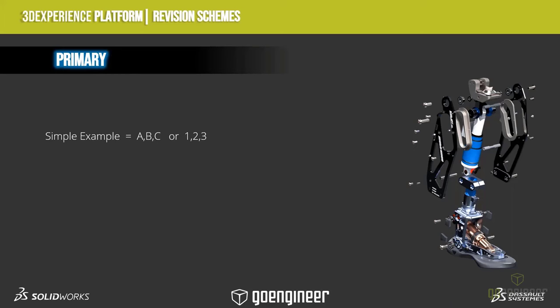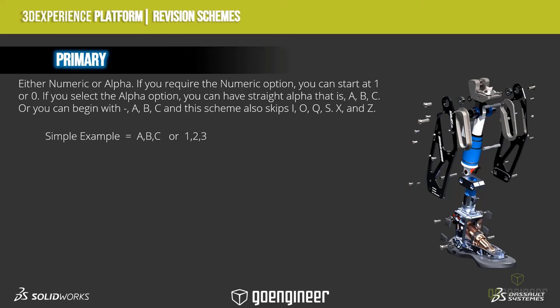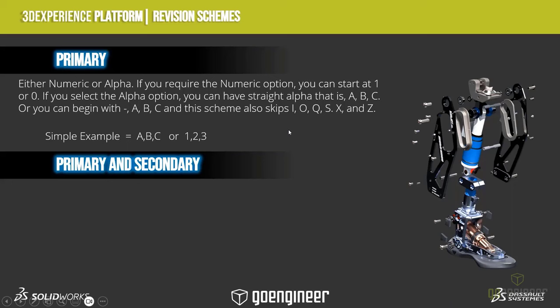A simple example of primary: I can tell the platform when I put something in to set it to A, go to B, C, D along the line — or numeric as in 1, 2, 3. If I set it to numeric or alpha, I can tell the platform that I want it to start at 1 or 0. If I select alpha, I can go straight A, B, C, or I can start with a negative A, B, C — I think that comes from government releases. That scheme also skips the letters that look like numbers in the alphabet automatically, with nothing you need to do to set that.